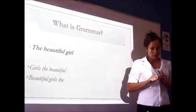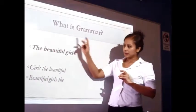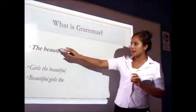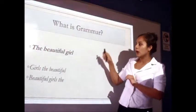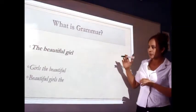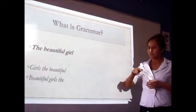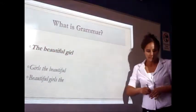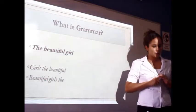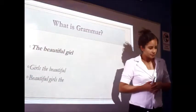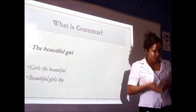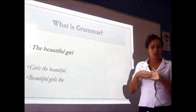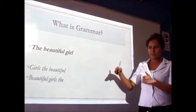'The beautiful girl.' The article 'the' must go before a noun or before an adjective. 'Beautiful' must always go before a noun. 'Girl' must go after an adjective. With this explanation, we have to define clearly what grammar is. Grammar is the structure of phrases and sentences, taking into account all the rules to follow.